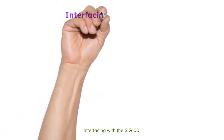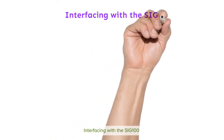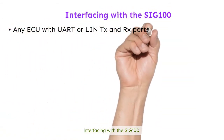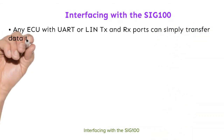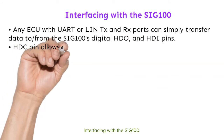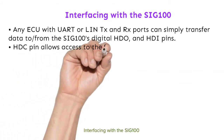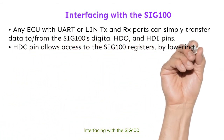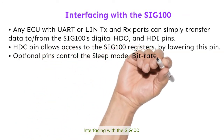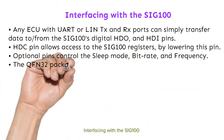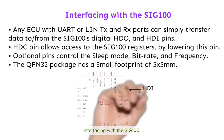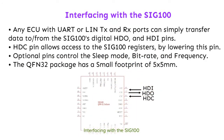Interfacing with the SIG100: any ECU with UART or LIN TX and RX ports can simply transfer data to and from the SIG100 HDO and HDI pins. The HDC pin allows access to the SIG100 registers by lowering this pin. Optional pins control the sleep mode, bit rate, and frequency. The QFN32 package has a small footprint of 5x5mm.